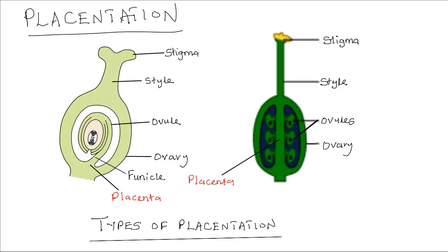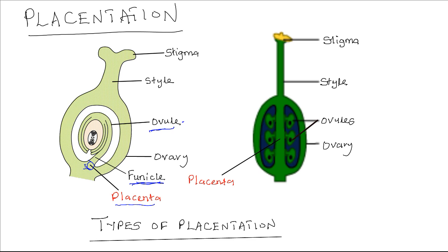Placentation. The placenta is that part on the ovary wall where the ovule or seed is attached. Attaching the ovule in a flower to the placenta is a stalk known as a funicle. Placentation therefore refers to the arrangement of the ovules in an ovary of a flower, or can also refer to the arrangement of seeds because the ovule develops into a seed, and so it can also refer to the arrangement of seeds in a fruit.